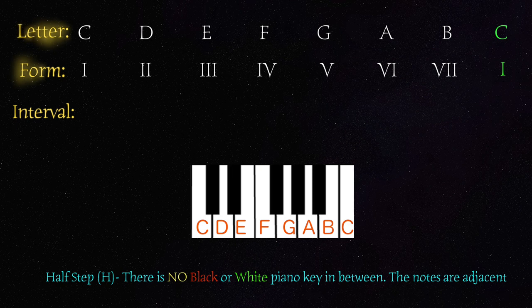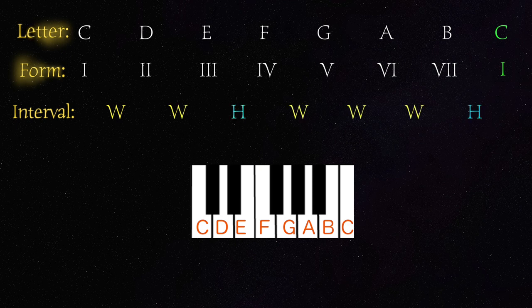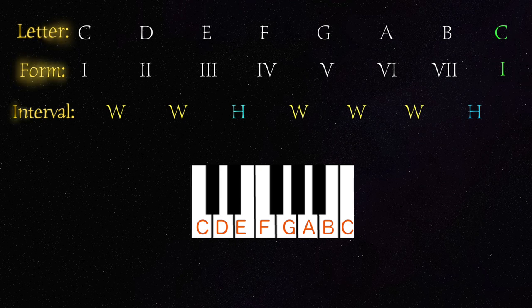C to D is a whole step. So it means there is a black key in between them. D to E is another whole step because we have another black key. From E to F, that is a half step. There is no note in between. There is no black key in between. From F to G is a whole step because there is a black key in between.